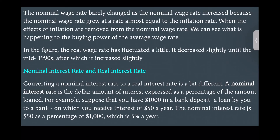Nominal interest rate and real interest rate. Converting a nominal interest rate to a real interest rate is a bit different. A nominal interest rate is a dollar amount of interest expressed as a percentage of the amount loaned. For example, suppose you have $1,000 in a bank deposit — a loan by you to a bank — on which you receive interest of $50 a year. The nominal interest rate is $50 as a percentage of $1,000, which is five percent a year.